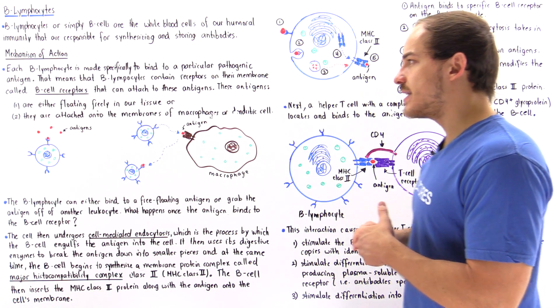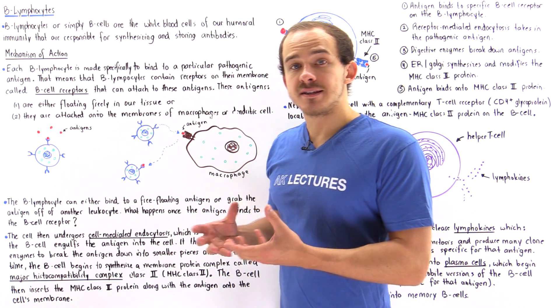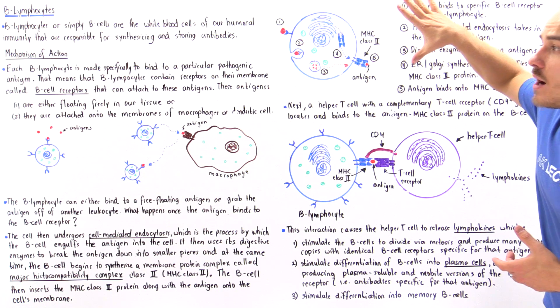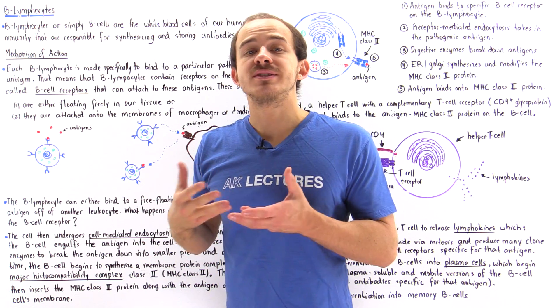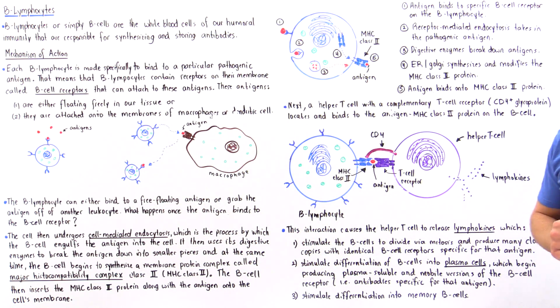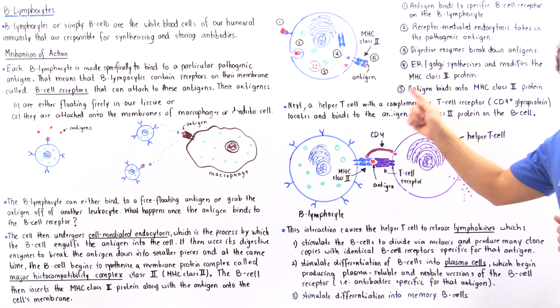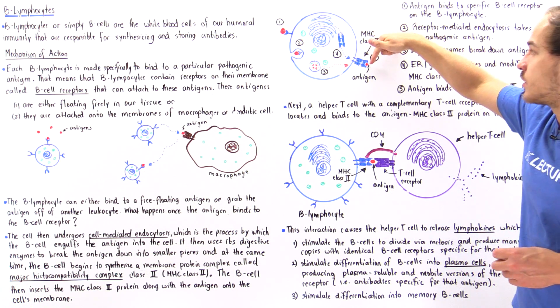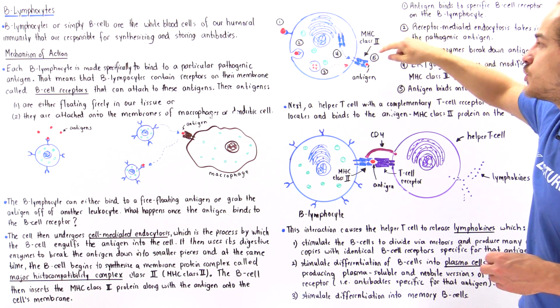For any defensive mechanism to take place, our B cell must interact with a T lymphocyte. A special type of T lymphocyte known as the helper T cell must be involved.